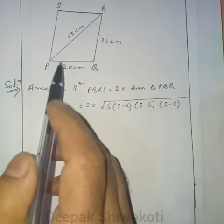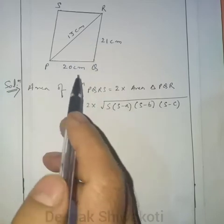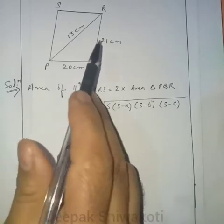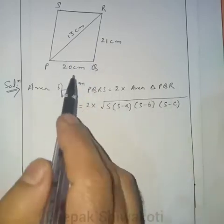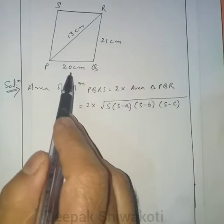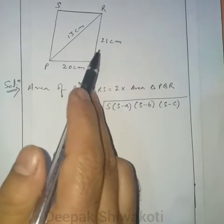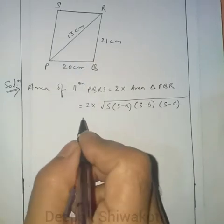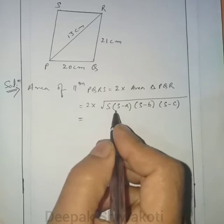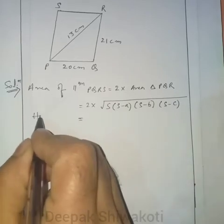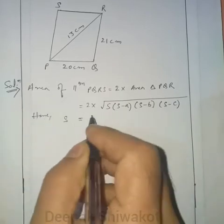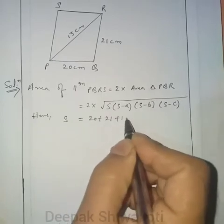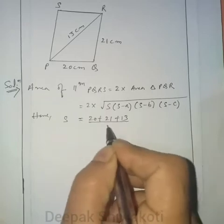S is the semi-perimeter — half of the perimeter of this triangle. A is PQ, B is QR, and C is PR. That is A equals 20 cm, B equals 21 cm, C equals 13 cm. So S equals (20 + 21 + 13) divided by 2.